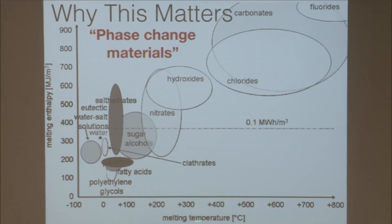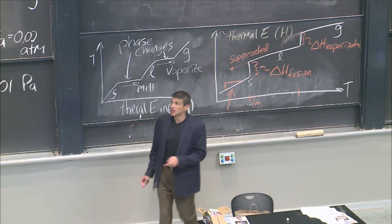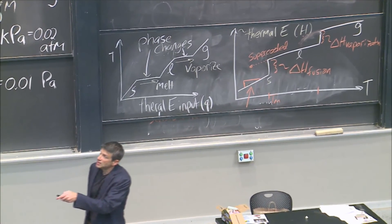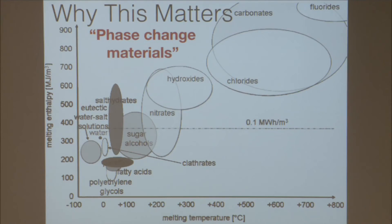If you plot the melting temperature T_M versus delta H — how much delta H you have — you get all sorts of classes of materials. You might want a certain melting temperature for wherever you're operating, but then you might not get a high enough delta H. Or you might want a really high delta H, but then the material doesn't melt until 700°C, which is way too high. So we need to fill this out — we need materials here and here. That's a call to chemistry.